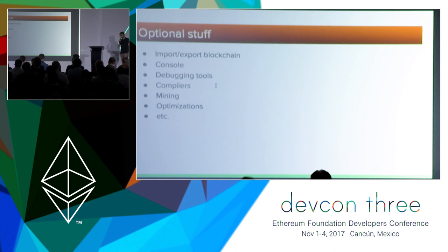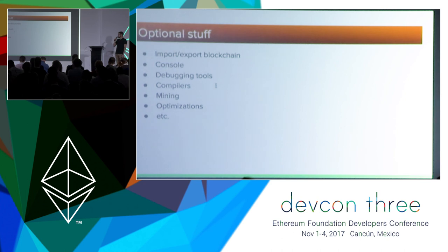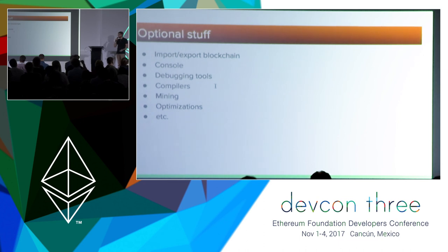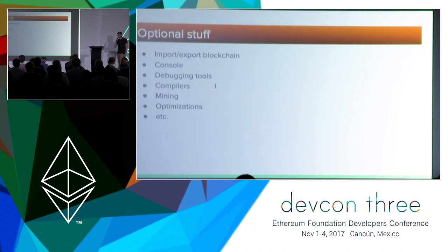There are also nice-to-have features that make life easier for users and dApps: import and export of blockchain data, an interactive console supporting Web3.js calls, debugging tools like a tool for running EVM code and seeing its results, and compilers from high-level languages like Solidity or LLL. Mining is of course a big and important feature, but it's not an indispensable part of the client — you don't need mining support for a client to be usable by dApps, and it can be completely separated. That's what we did with CppEthereum, having the GPU miner as a completely separate project.